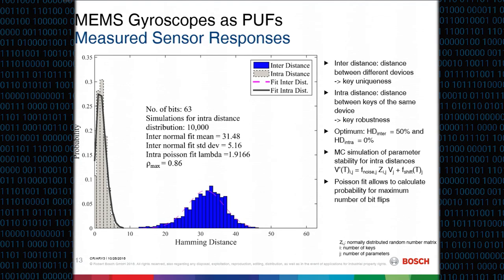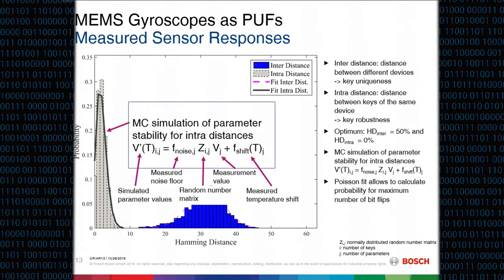In the evaluation, we first calculate Hamming distances as is standard in the PUF field. We calculated inter-distances — the distance between keys from different sensors, a measure of key uniqueness shown in the blue distribution — and intra-distances, the distance between keys from the same sensor at different times or environmental conditions such as temperature. An important point is that these two distributions must overlap with only negligible probability, which is the case here. We get a bit string length of 63 bits for a correlation upper limit of 0.86.